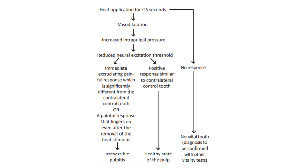The principle of the heat test requires applying heat for no more than five seconds. Heat causes vasodilation, which increases intrapulpal pressure and reduces the neural excitation threshold. Three types of responses: no response indicates a non-vital tooth; immediate excruciating pain or lingering pain after stimulus removal suggests irreversible pulpitis; and a positive response similar to the contralateral control tooth suggests a healthy pulp.